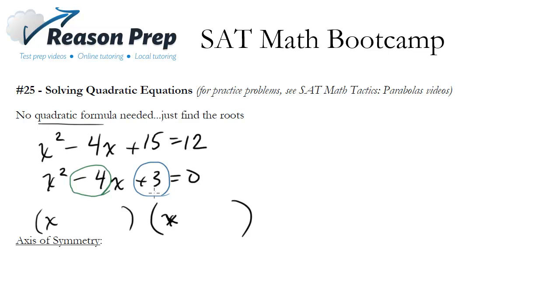So what numbers multiply to positive 3? Well, it's either 1 and 3 or negative 1 and negative 3. And we know that negative 1 and negative 3 are also going to add up to negative 4, so this is going to be my factoring.